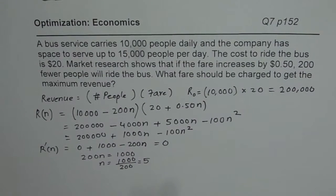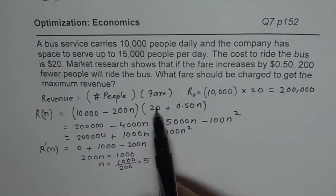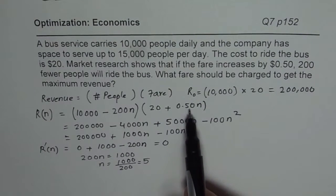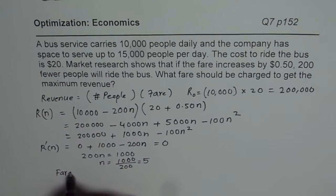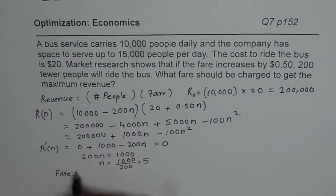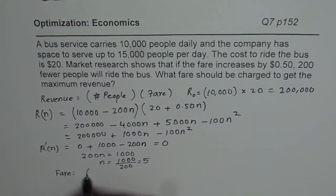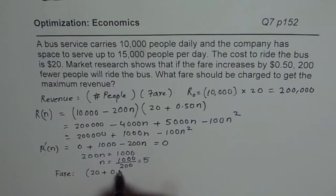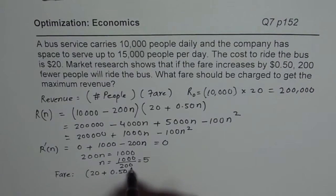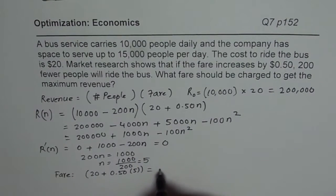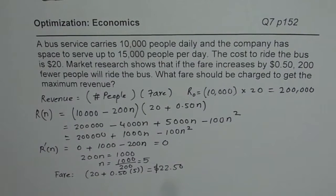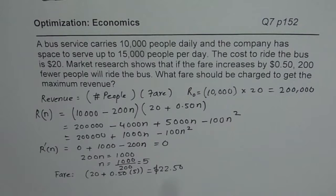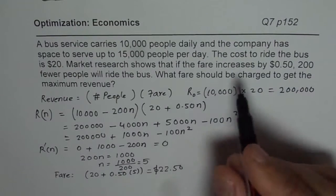So it really means we have to increase the fare by 5 times 50 cents. So that is what it means. So with this value, we get fare, which may give us the maximum revenue, is going to be 20 plus 0.50 times 5. So that is what it is, which is $22.50. So that becomes the fare which is going to give you the maximum amount. So it is a good idea to calculate this value also.